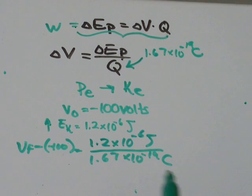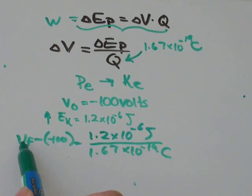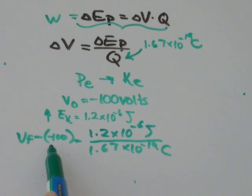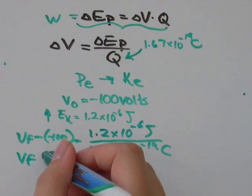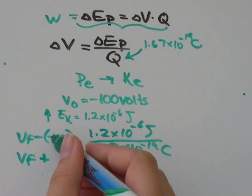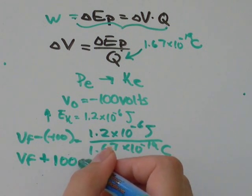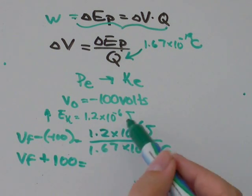The first thing I would notice is that we're going Vf minus negative 100. That's going to be the same as a negative minus a negative, which is the same as adding. That's going to be Vf plus 100 equals whatever this turns out to be.